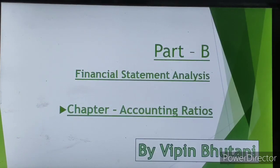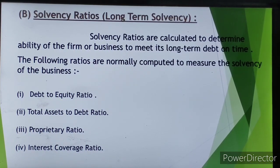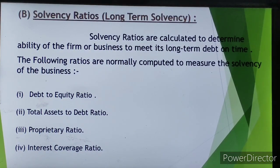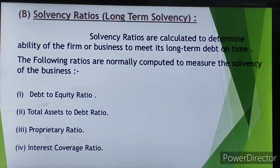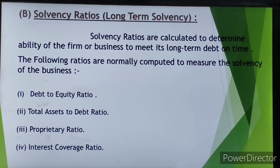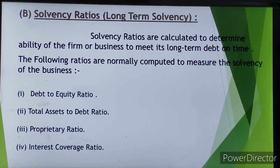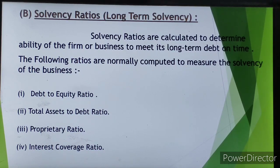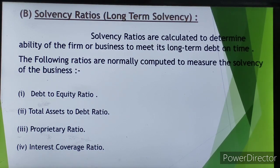Hello students, today we will discuss the next topic of financial statement analysis: the chapter on accounting ratios. In our previous lectures, we discussed liquidity ratios, which include two ratios: current ratio and liquid ratio. Now the second major ratio is solvency ratio, which is related to the long-term solvency of the business. In liquidity ratio, we assessed the short-term solvency of the business.